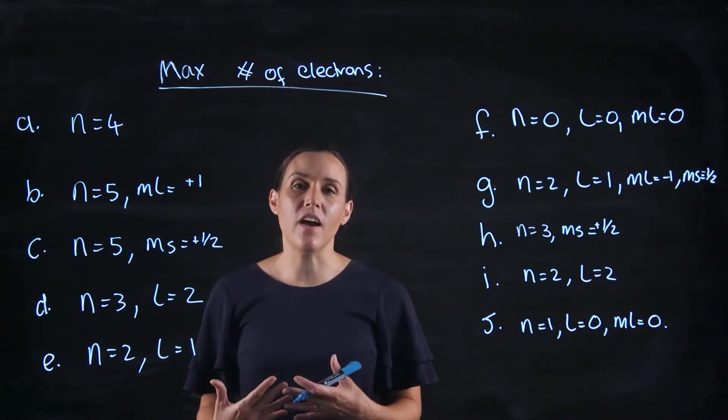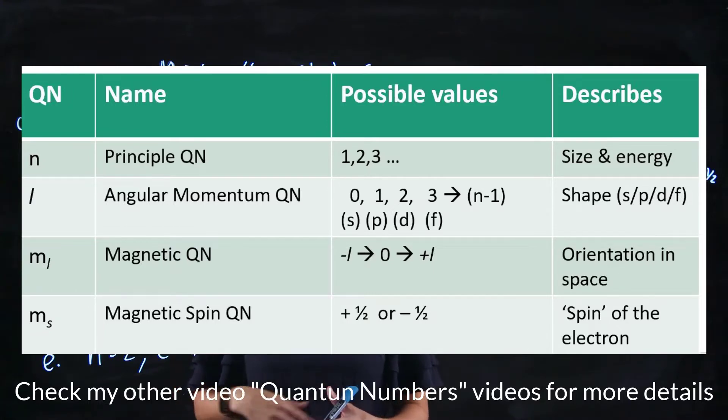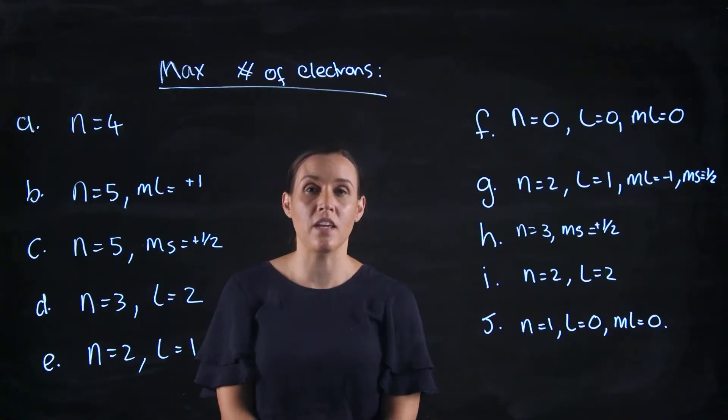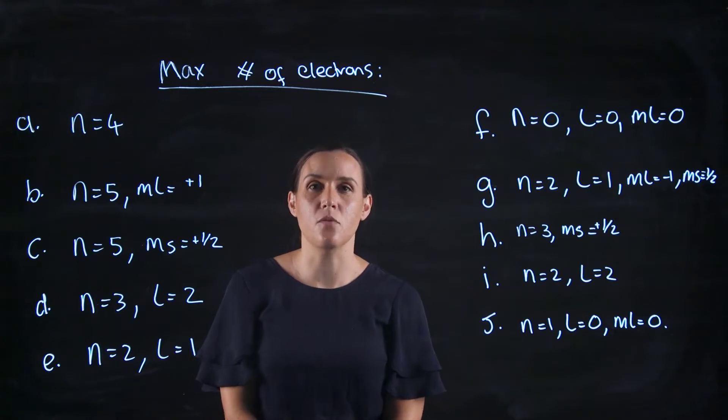So remember the n value is the period on your periodic table, the l value is the shape of the orbital, so if l equals 0 it's s, if l equals 1 it's p, if l equals 2 it's d. The ml is the axis, so that axis goes from minus l through 0 to plus l. So for example, our p orbitals that would be minus 1, 0, plus 1, representing our x, y, z axis. And the ms can either be plus a half or minus a half. So if you're given a question with the ms not being plus a half or minus a half, then you know that's not possible.